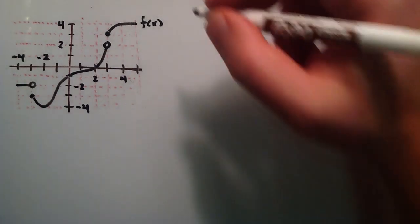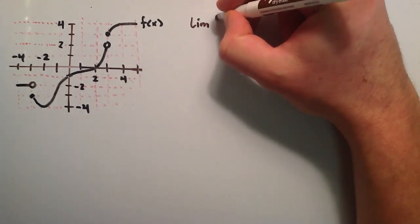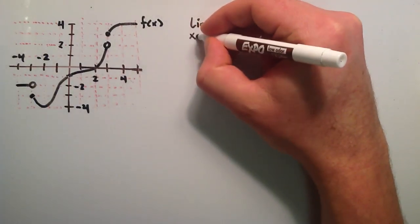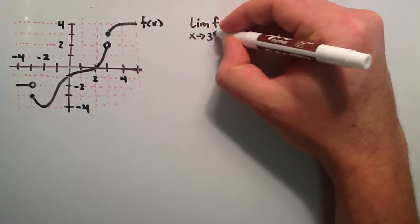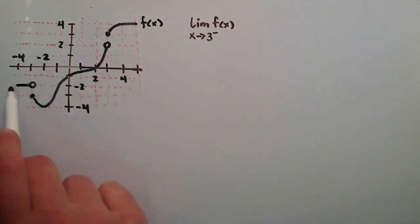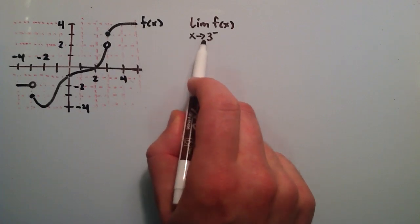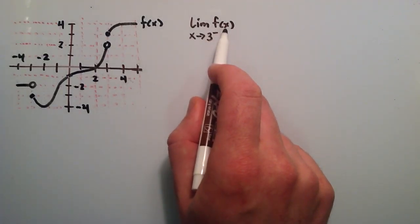The first thing we're going to look at is our function here, and we're going to take the limit as x approaches the value 3 from the left. So we've got this function f of x that I've sketched out here, and we're basically going to approach the value x equals 3 from the left.